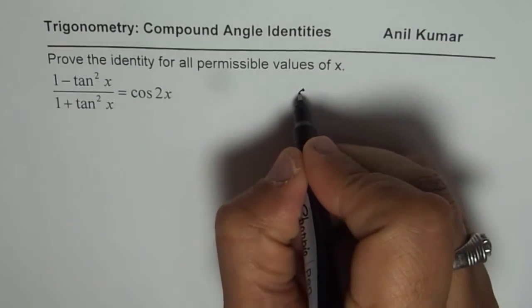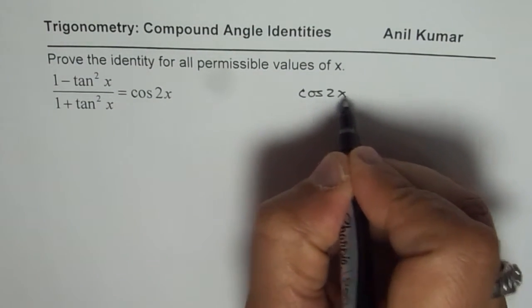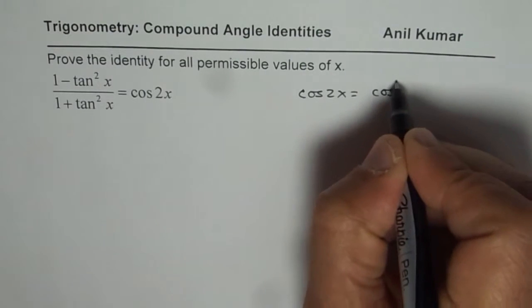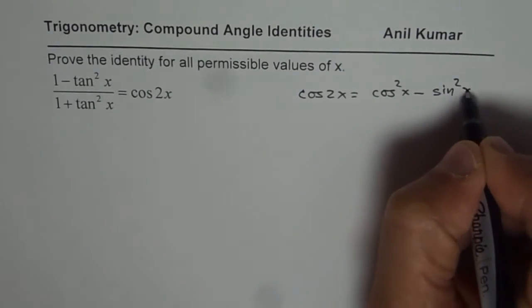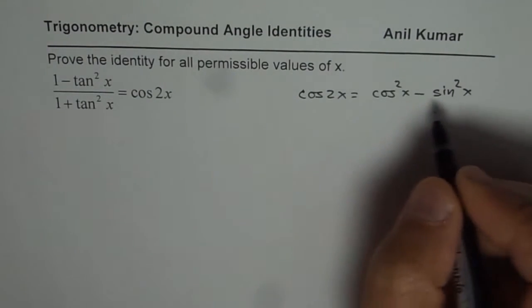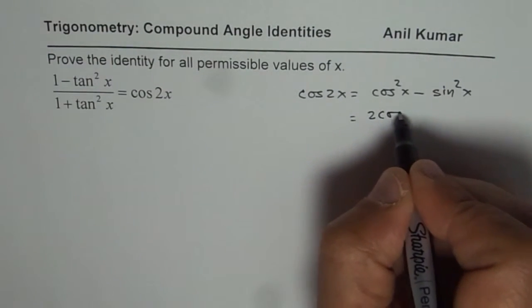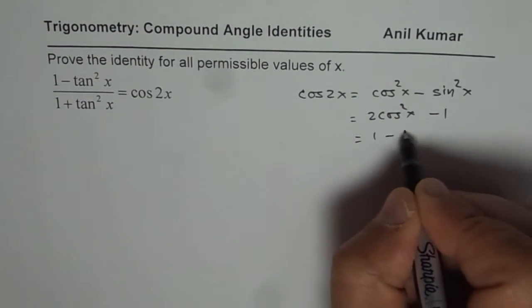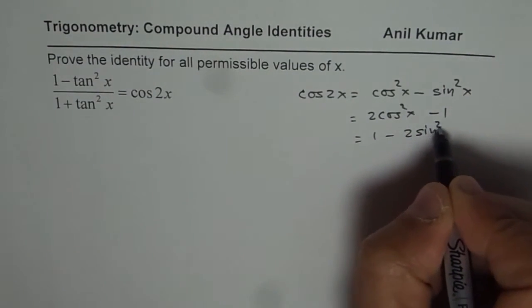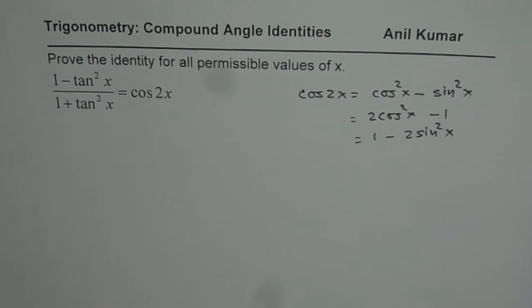I hope you remember what is cos 2x. Cos 2x equals cos square x minus sin square x. This is one expression. It could also be written in many different forms, as cos square x minus 1 times 2, or 1 minus 2 sin square x. So these are different ways in which you could write cos 2x.